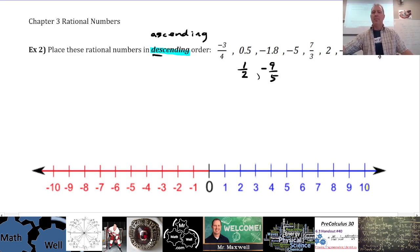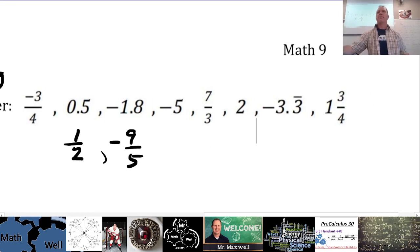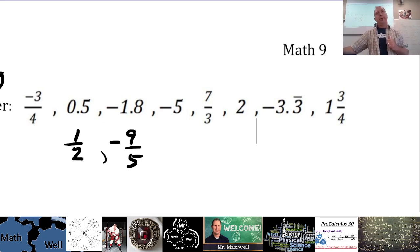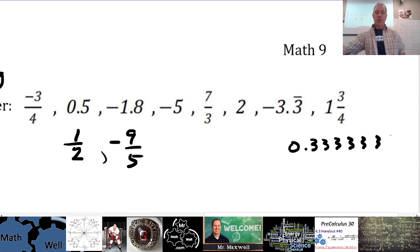Now, negative 3.3 repeating — that might be the trickiest to write in fraction form. Is this a rational number? Can I write it as a fraction? A rational number can be written as a ratio of two integers, and remember — it's either a terminating or a repeating decimal. So if this has a repeated part, that's our indication that it can be written as a rational number. Do any of you know what 0.3 repeating is as a fraction? It's 1 over 3. So 0.3 repeating is exactly one-third — that's very helpful.